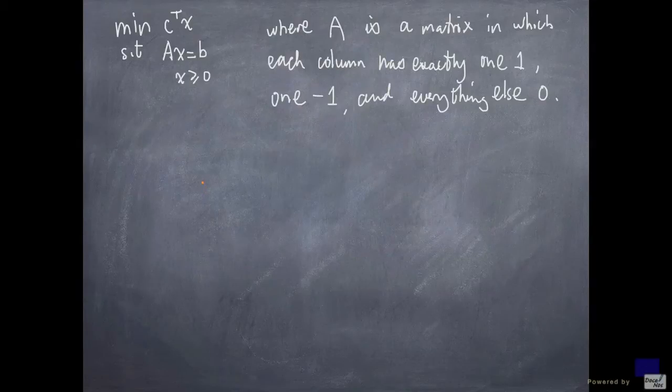We are going to look at a special case of a linear programming problem in standard form. So again, a problem is minimize c transpose x subject to ax equal to b, x greater than or equal to 0. But here we are going to have the matrix A to have the following property: that if you look at each column, it has to have exactly one 1, one minus 1, and everything else 0.